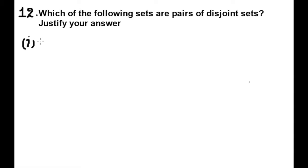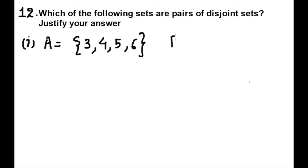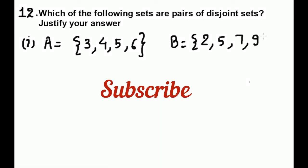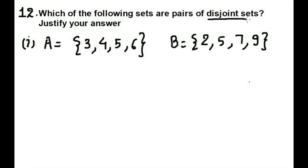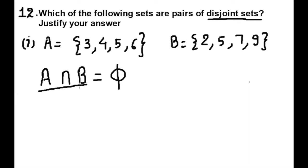The first set is set A equal to {3, 4, 5, 6} and set B equal to {2, 5, 7, 9}. Disjoint sets means A intersection B is equal to the null set. Intersection means we have to find the common elements between A and B.